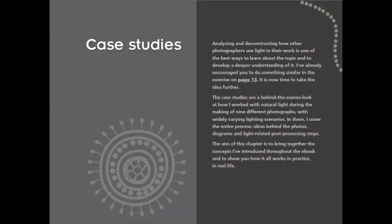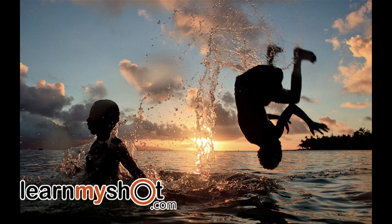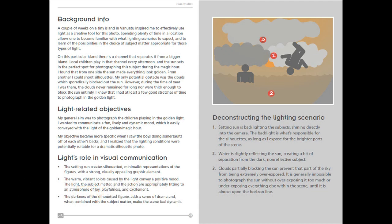The last chapter, chapter seven, is case studies. This is where he actually shows you a photograph and then makes a drawing to illustrate where the light was coming from in each image. Here's one of Mitchell's case study photographs — a wonderful image with all the motion and the lighting. On the next page he illustrates where the light was coming from, his camera settings, and how he actually got the shot.